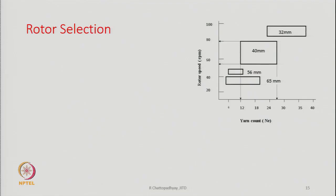Let us now discuss rotor selection. You see a diagram on the right-hand side where on the x-axis we have count of yarn and on the y-axis we have rotor speeds. We also see rectangular blocks showing the diameter of the rotors, the speed range, and the count range in which they can work. It is a very interesting picture.